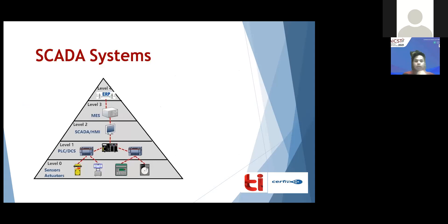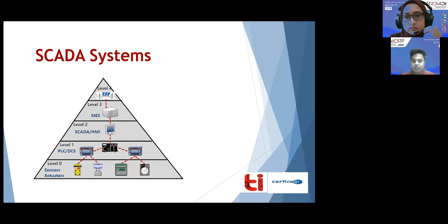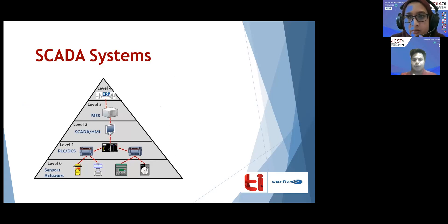Here is the SCADA architecture. SCADA basically consists of two main layers: one is the control center and the other is the field side. The control center consists of the Human Machine Interface, which is responsible for controlling the whole system, the Master Terminal Unit, which is responsible for communicating with the field side, and the Historian, which stores the data.